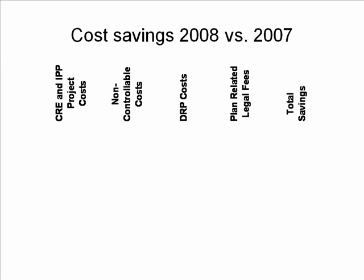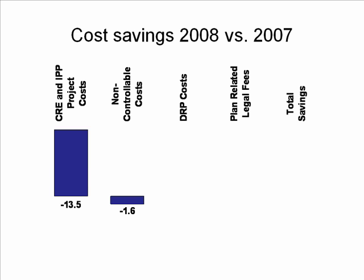We have a variety of areas that have contributed to our cost savings this year over last year. The largest area is a reduction in costs in the CRE and IPP project by 13 and a half million dollars. Our non-controllable costs we've been able to reduce by 1.6 million. Our DRP costs contributed 200,000 and plan-related and legal fees 300,000. So the total savings is 15.6 million dollars from last year in this year's budget.